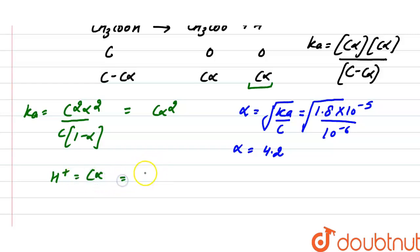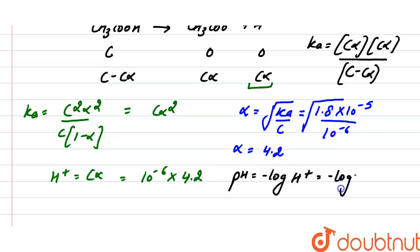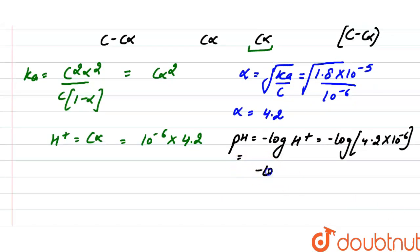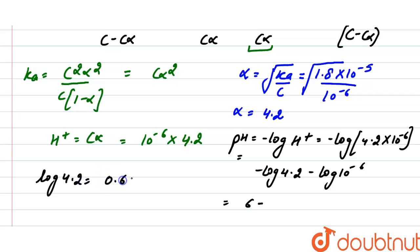The concentration C is 10 raised to the power minus 6 and alpha is 4.2, so [H⁺] = 4.2 into 10 raised to the power minus 6. The pH equals minus log of [H⁺], so pH = minus log of (4.2 into 10 raised to the power minus 6). This equals minus log 4.2 minus log 10 raised to the power minus 6, which gives 6 minus log 4.2. Since log 4.2 is approximately 0.62, the pH is 5.38.